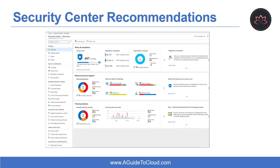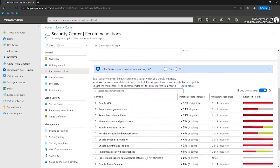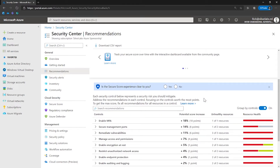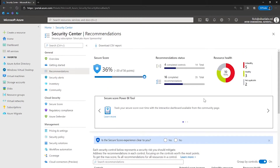You can reduce the chances of a significant security event by configuring a security policy and implementing the recommendations provided by Azure Security Center. Security Center automatically runs continuous scans to analyze the security state of your Azure resources. When it identifies potential security vulnerabilities, it creates recommendations that guide you through configuring the needed security controls. Security Center updates recommendations within 24 hours, except OS security configuration recommendations which are updated within 48 hours, and endpoint protection recommendations within 8 hours. Recommendations are grouped by severity.